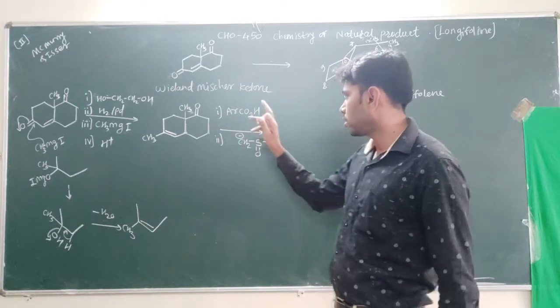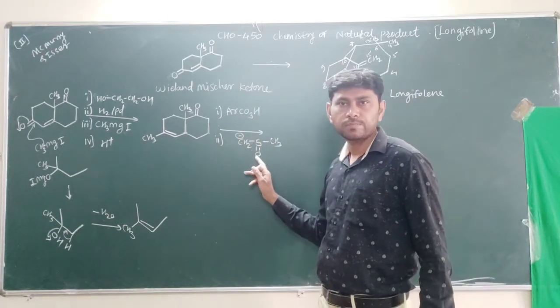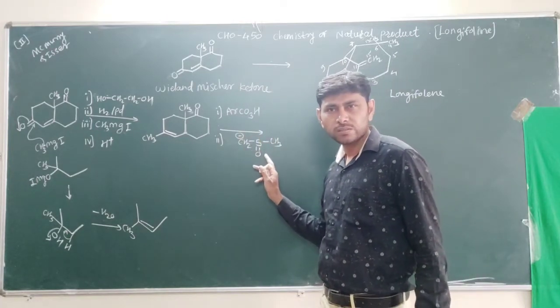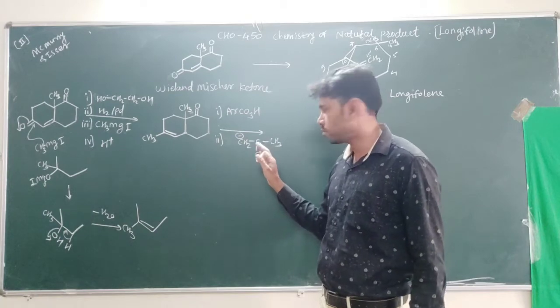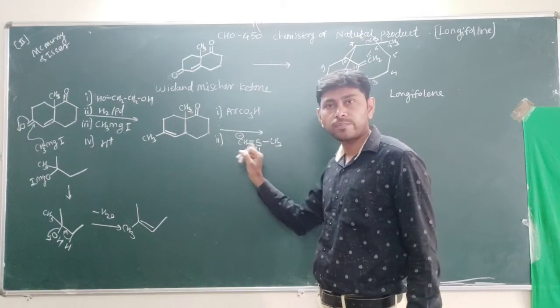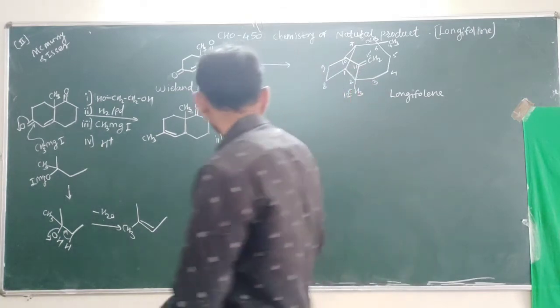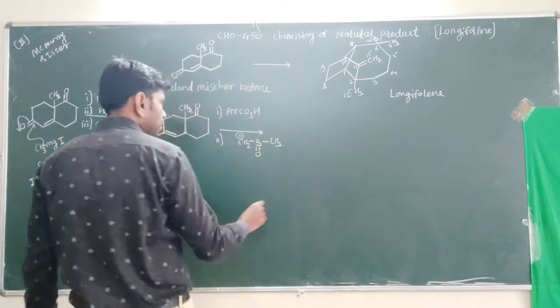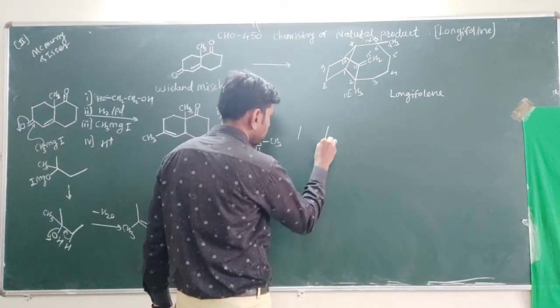The 7-10 bond formation is there due to the breaking by this one. The base we have used — we know that this comes from a thio area (thiol-derived base). The resultant product is the formation of the 7-10 bond.